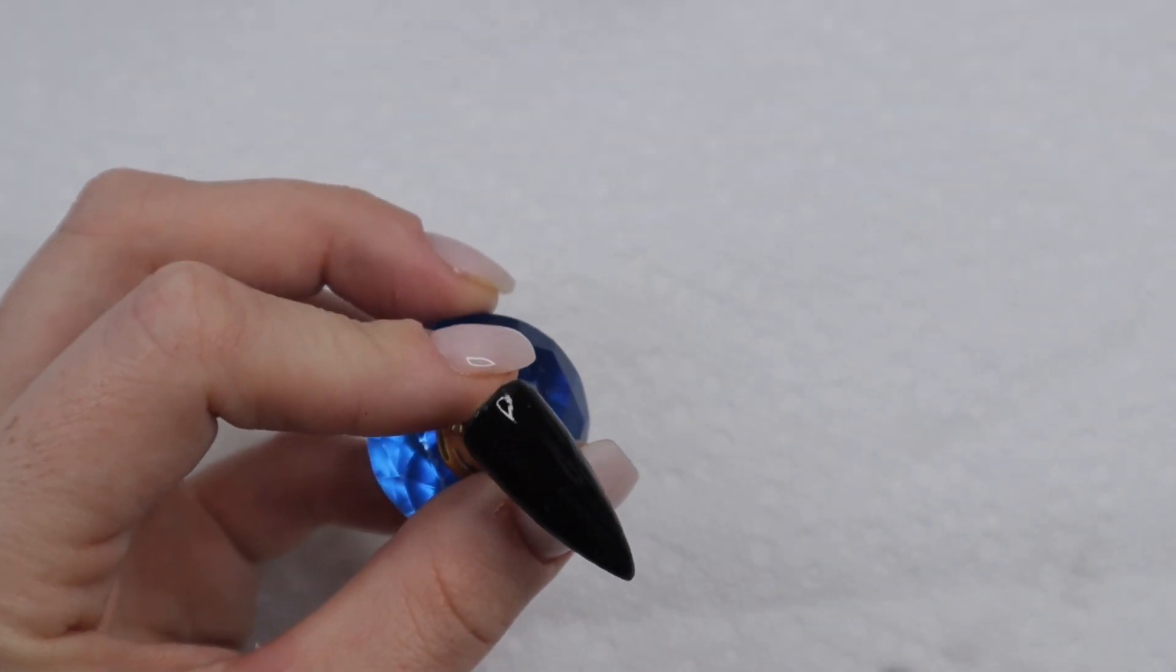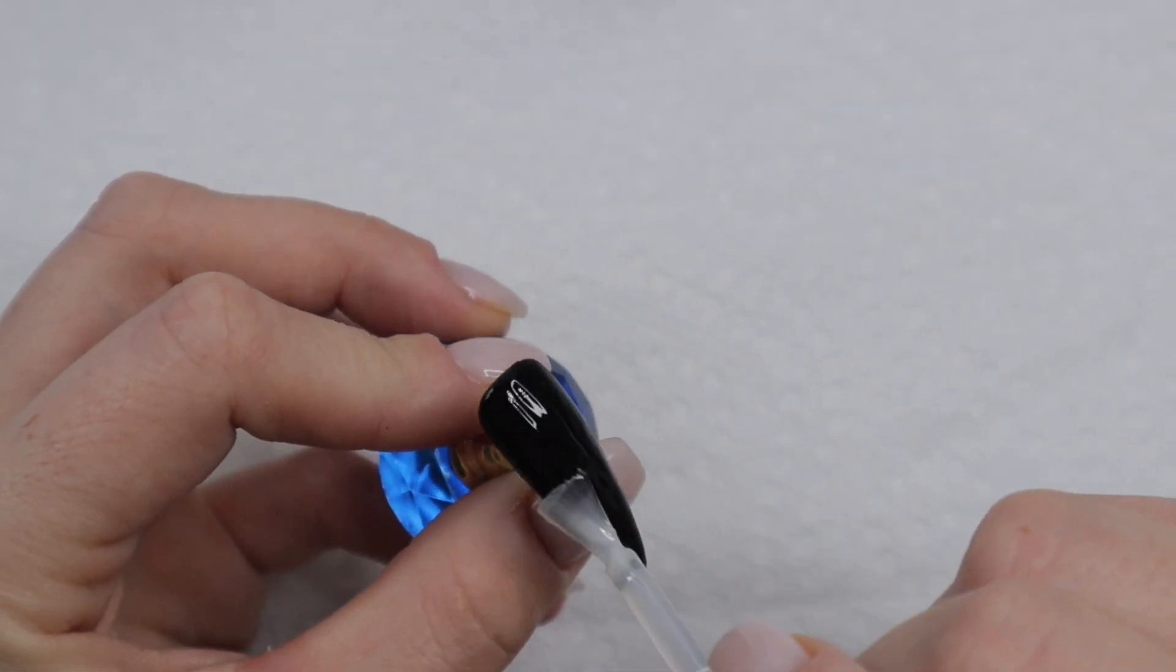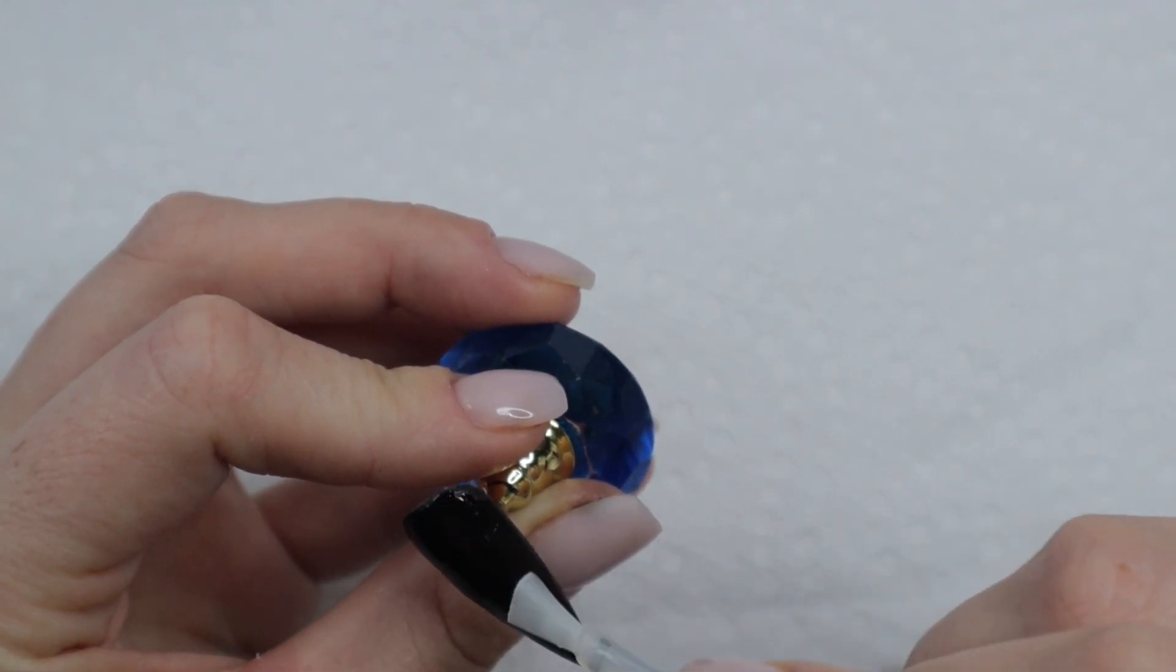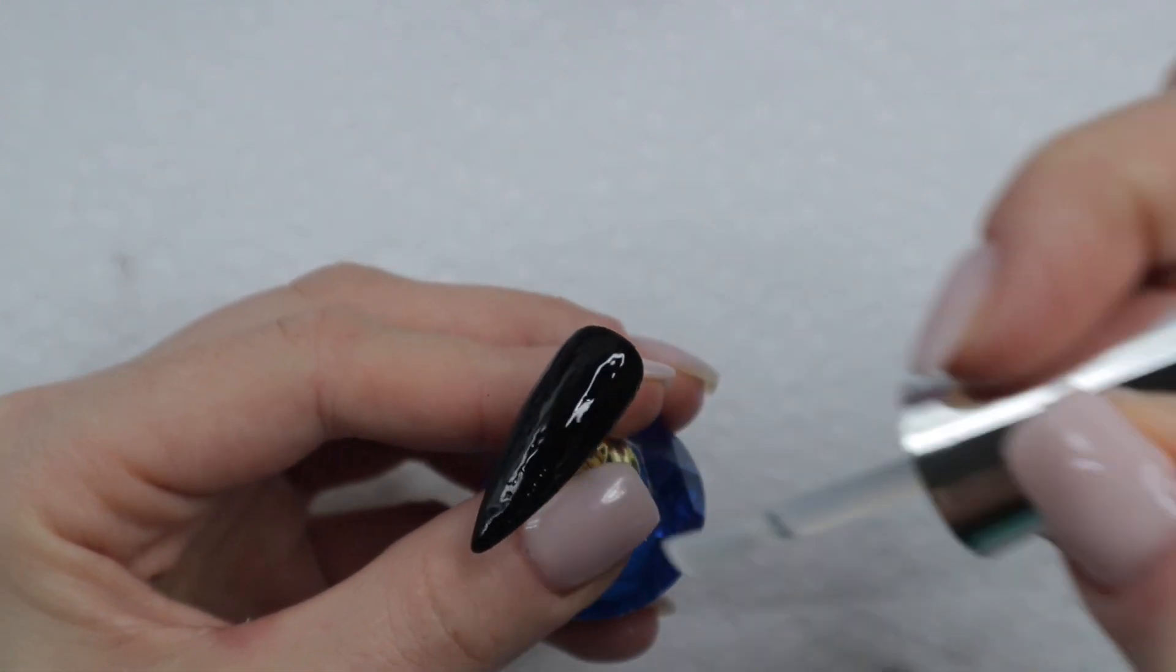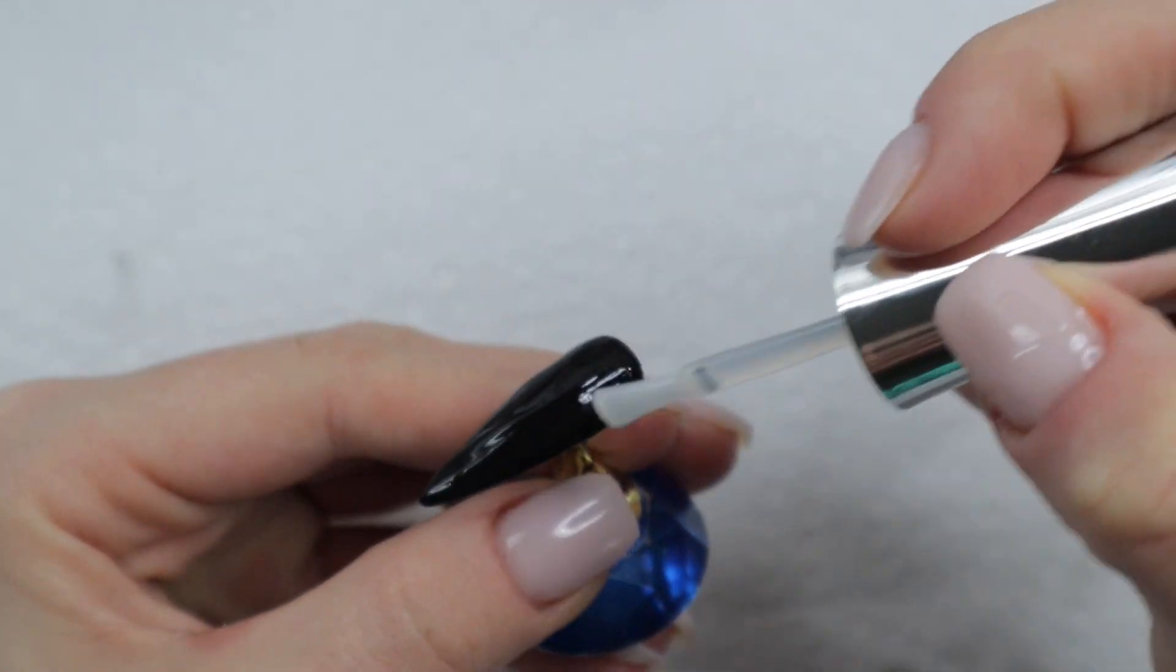Since the matte dip top coat dries really fast when you're applying it to the nail, it's very important that you apply a generous layer onto the nail and use fast and even strokes when applying this.